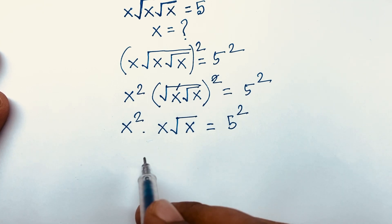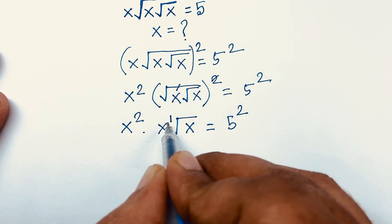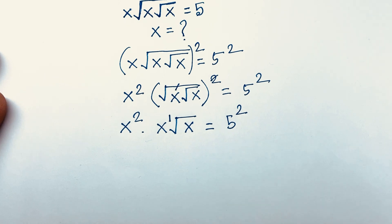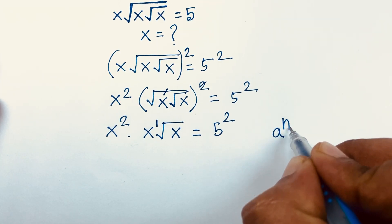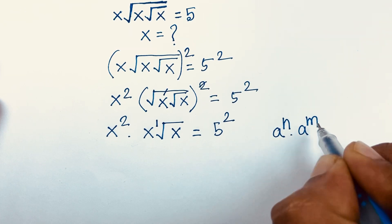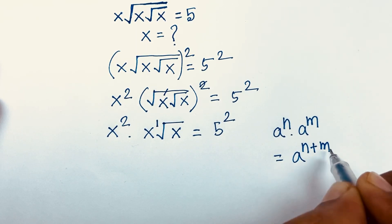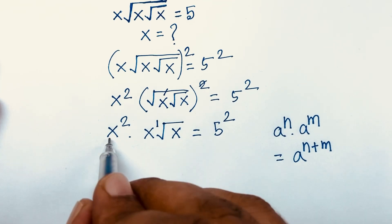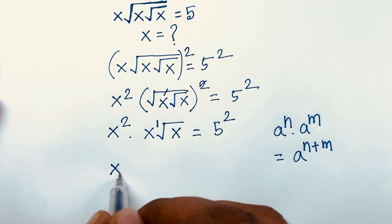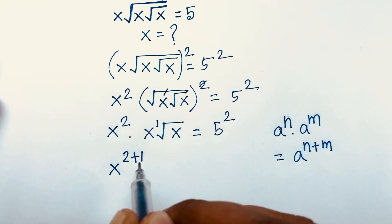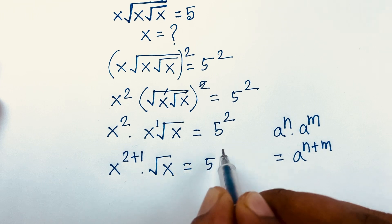Here x has an exponent of 1. We know the exponential rule: a to the power n times a to the power m equals a to the power n plus m. According to this rule, here the bases are the same, so it will be x to the power 2 plus 1, times square root x, is equal to 5 to the power 2.